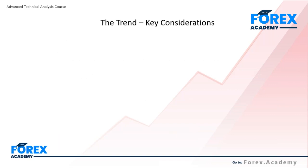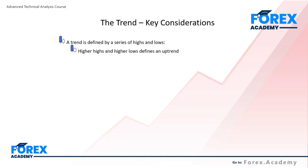Let's start off our discussion with a focus on the trend and recap some key considerations. A trend is defined by a series of highs and lows — an uptrend is defined by higher highs and higher lows, and a downtrend is defined simply by lower lows and lower highs. Always bear in mind this straightforward definition of a trend and apply it to price action; you will go a long way in establishing the underlying trend condition and, perhaps more importantly, when that trend condition changes.